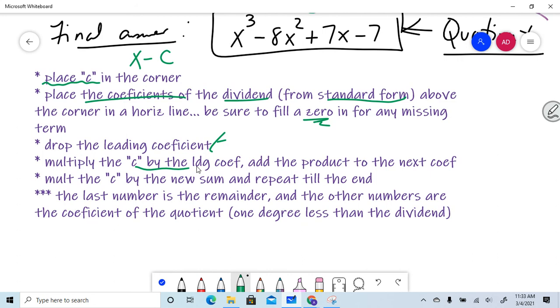Repeat, repeat, repeat. Just remember that last number is always the remainder. And then all the other ones are the coefficient of the quotient.